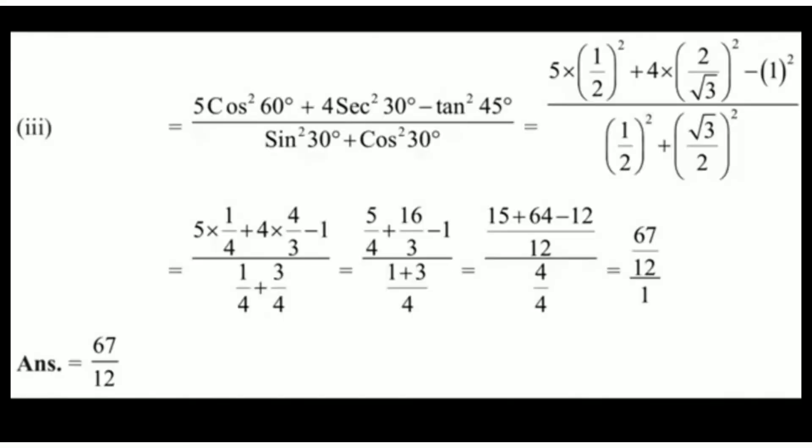Now we proceed to the next question. The statement says: (5 cos² 60° + 4 sec² 30° − tan² 45°) divided by (sin² 30° + cos² 30°). The important thing to notice here is the squares — we have to take the square of the value of the T-ratio, not the square of the angle itself.